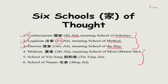The other schools are not as independently present today. The fourth is Moism, started by Master Mo, or Mo Tzu — his school is known as Moism or Mo Chia.